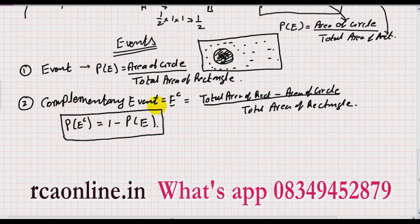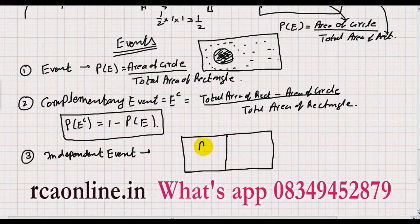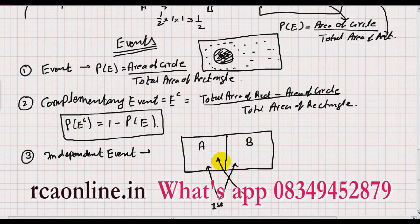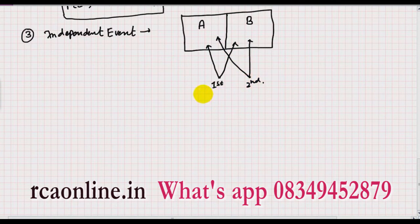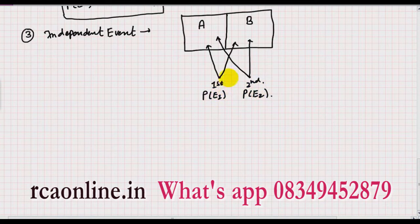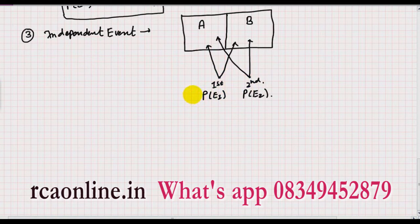The third type of event is the independent event. Consider the same wall problem with two areas A and B. If I hit the ball, it will hit either A or B. Now I hit the ball again — the outcome of the second throw is not dependent on the outcome of the first. The second case is independent of the first case, so these two events are called independent events.